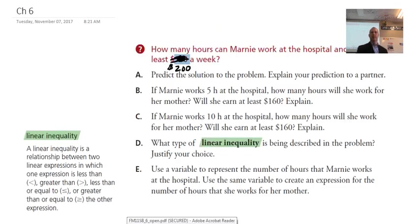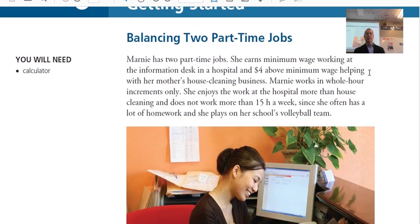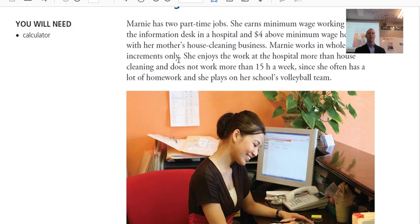Let's get to our textbook here. Let's do this getting started activity. How many of you have jobs here in this class? Not too many? Okay, a few of you. So this is a story about Marnie. She has two part-time jobs. Balancing two part-time jobs. Marnie has two part-time jobs. She earns minimum wage working at the information desk in a hospital and $4 above minimum wage helping with her mother's house cleaning business. Marnie works in whole hour increments only. She enjoys the work at the hospital more than the house cleaning, but does not work more than 15 hours a week since she often has a lot of homework and she plays in her school's volleyball team.